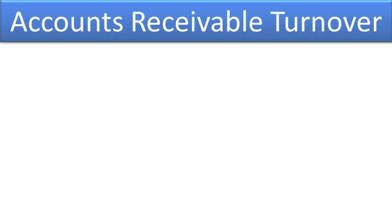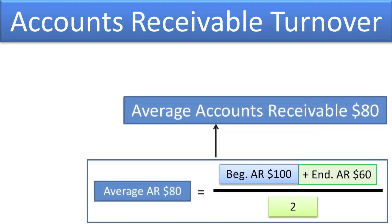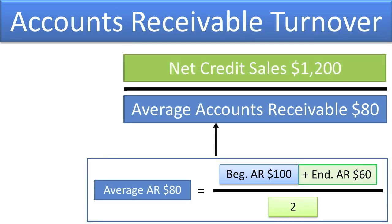Company A's prior year ending balance sheet showed accounts receivable of $100, which will become the beginning balance for the current year. The current year balance sheet showed ending accounts receivable of $60. By adding the two balances, we get $160, which we then divide by two to get the average accounts receivable for the year of $80. During the year, it generated $1,200 of net credit sales, resulting in an AR Turnover Ratio for the year of 15, as shown here. This means that Company A was able to make credit sales of $80 and then turn them over into cash 15 times during the year.